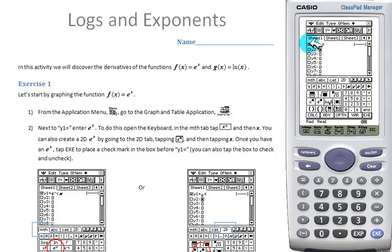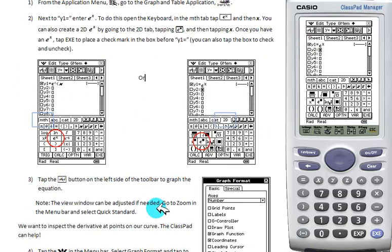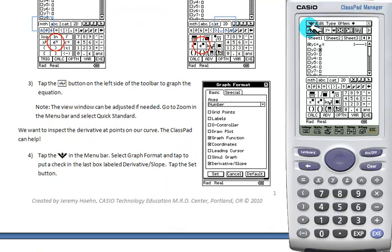That puts a checkmark in the box saying we've selected this equation. You can also use your stylus to check this box. With the box checked, we're going to hit the graph button.